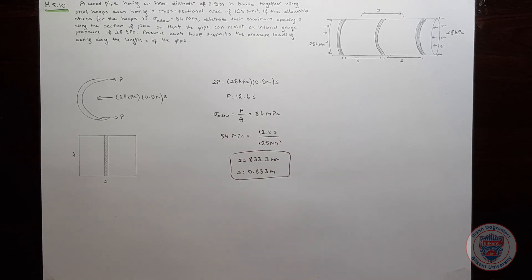This is the maximum spacing S so that the steel hoops can resist the pressure.